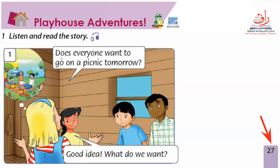Jenny says: 'Does everyone want to go on a picnic tomorrow?' Tomorrow means the next day. Lily says: 'Good idea! What do we want?' We put 'do' here because we are talking about 'we' — plural — so we use 'do.' Lily is asking what they want to bring.